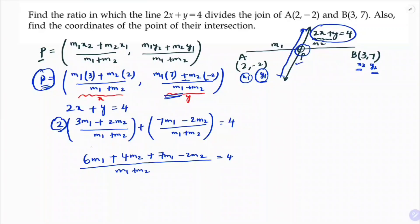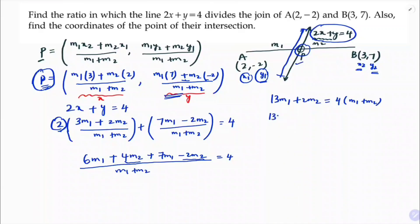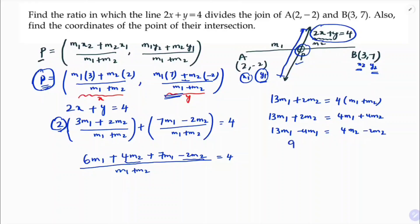Multiplying through: 2 times 3 gives 6m1, plus 2 times 2 gives 4m2, plus 7m1 minus 2m2 equals 4(m1 + m2). Combining like terms: 6m1 + 7m1 = 13m1, and 4m2 - 2m2 = 2m2. So 13m1 + 2m2 = 4m1 + 4m2.